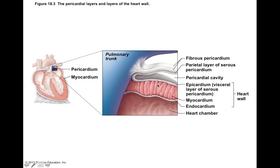The heart muscle wall varies in thickness — several millimeters thick in some regions, several centimeters in others. Here it's pretty thin because it's in the atria. The myocardium is cardiac muscle, and the endocardium lines the inner spaces of the heart.